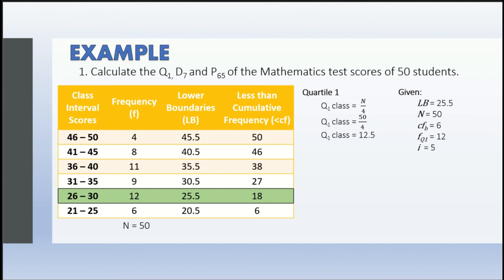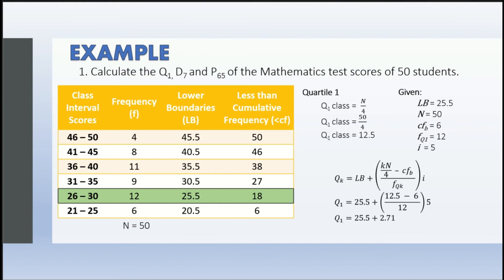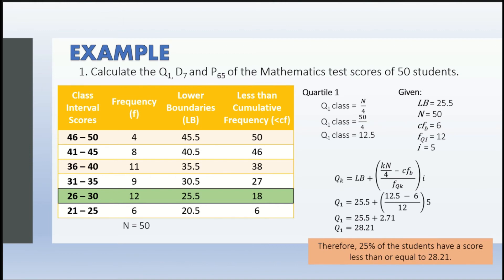We substitute into the formula: Q sub k = lb + [(kn/4 − cf sub b) / f sub Qk] × i. So we have 25.5 + [(12.5 − 6) / 12] × 5 = 25.5 + 2.71 = 28.21. Therefore, 25% of the students have a score less than or equal to 28.21.